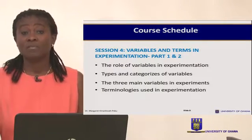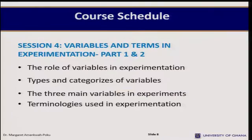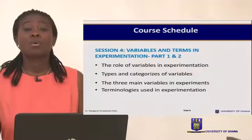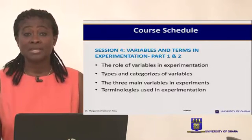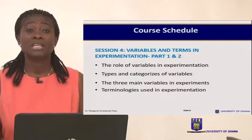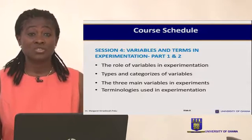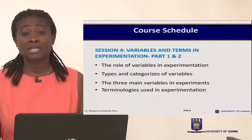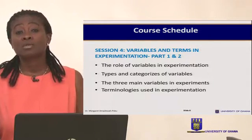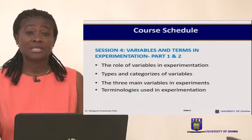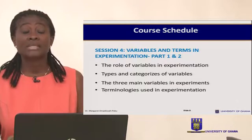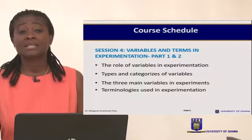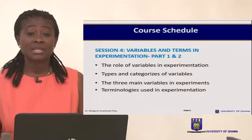In Session 4, I'll talk about variables and terms used in experimentation. This session will be in two parts. First, I'll cover the variables used in experimentation — there are three: independent variables, dependent variables, and extraneous variables. Then I'll talk about terminologies used in experimentation, such as what a sample is and what a population is.